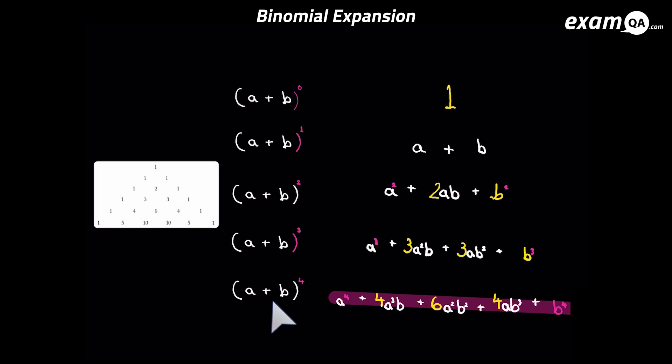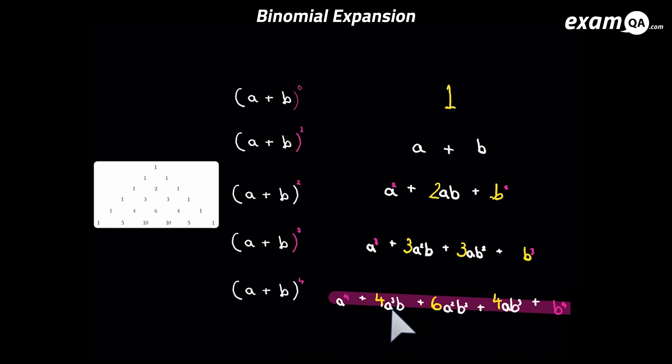Let's look at the expansion of a plus b to the power of four. First you'll notice we have a to the highest power, which is the power of four, and b is non-existent in this term — or you can say b is to the power of zero. In the next term, a's power has gone down, but b's power has gone up from zero to one, so b suddenly appeared. Then a's power has gone down again to two, and b's power has gone up again by one, so a's power is two and b's power is also two.